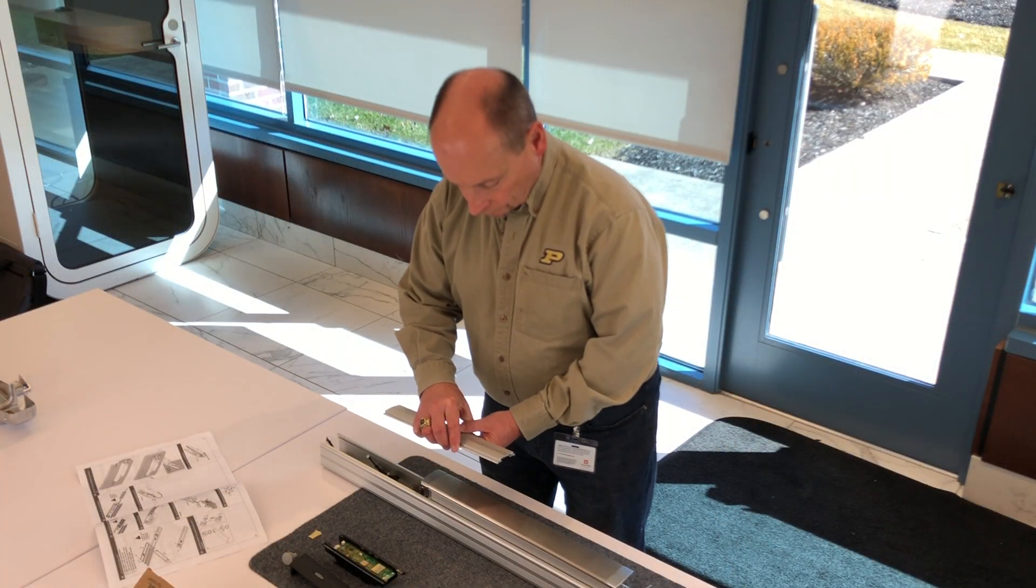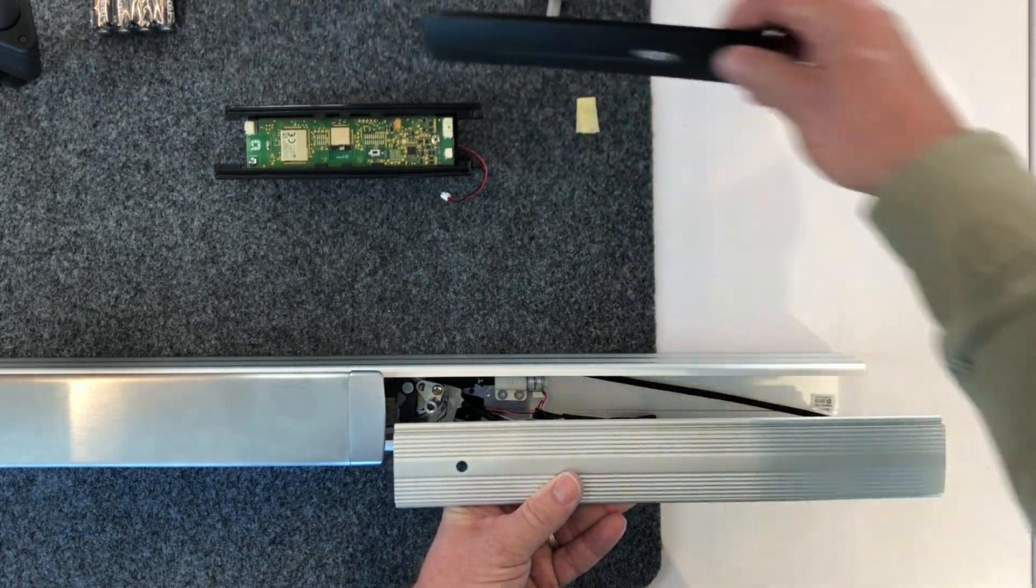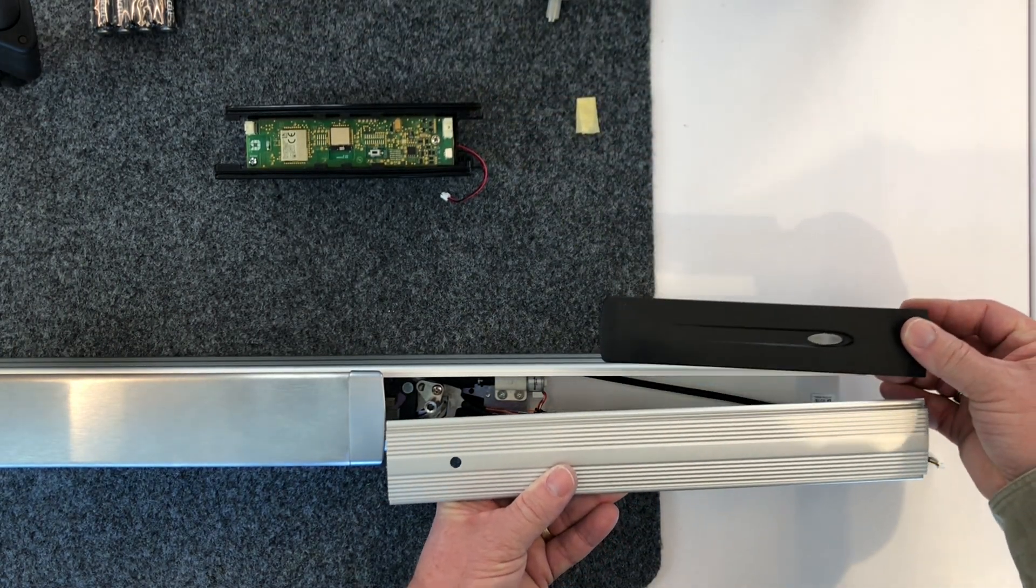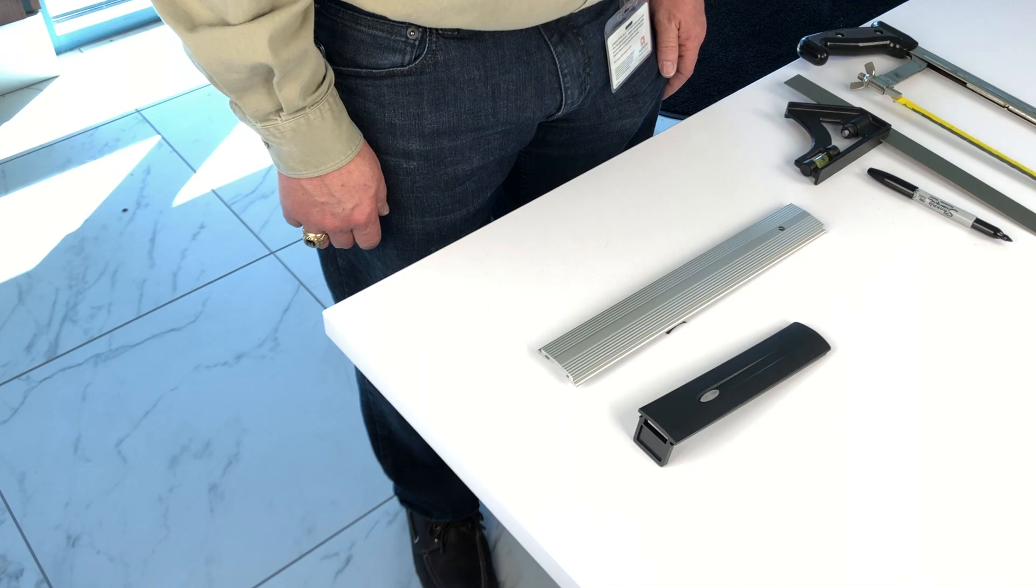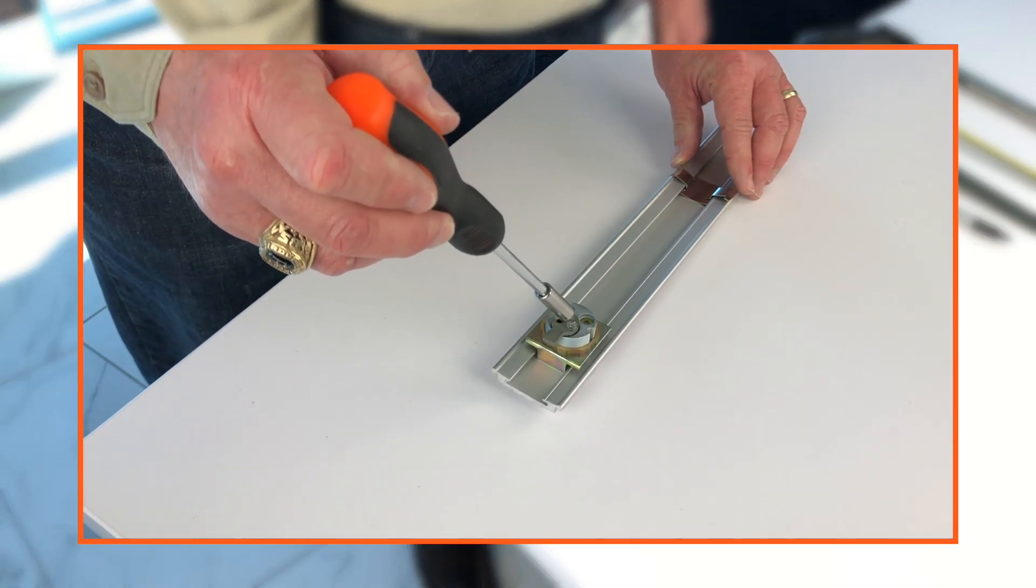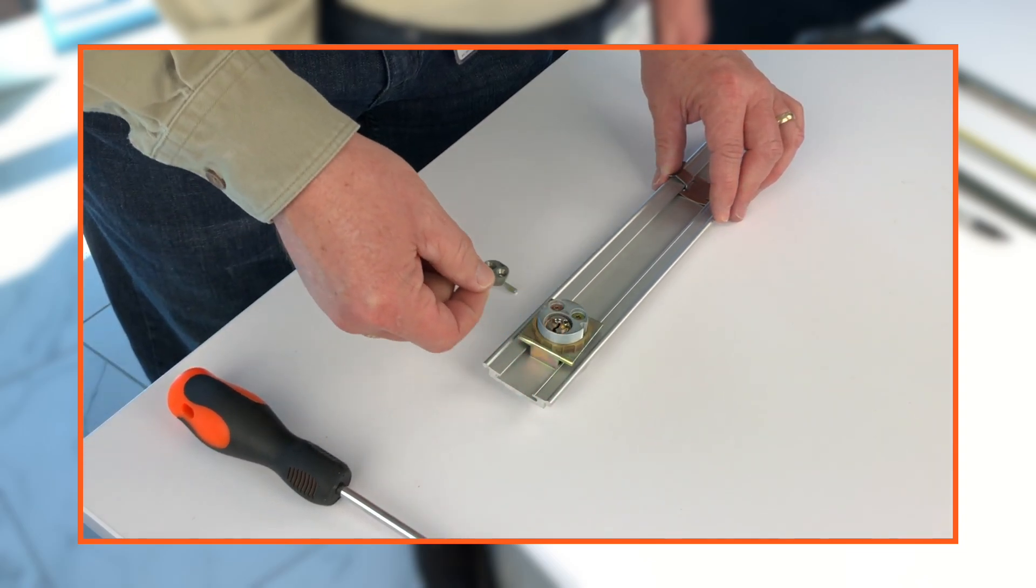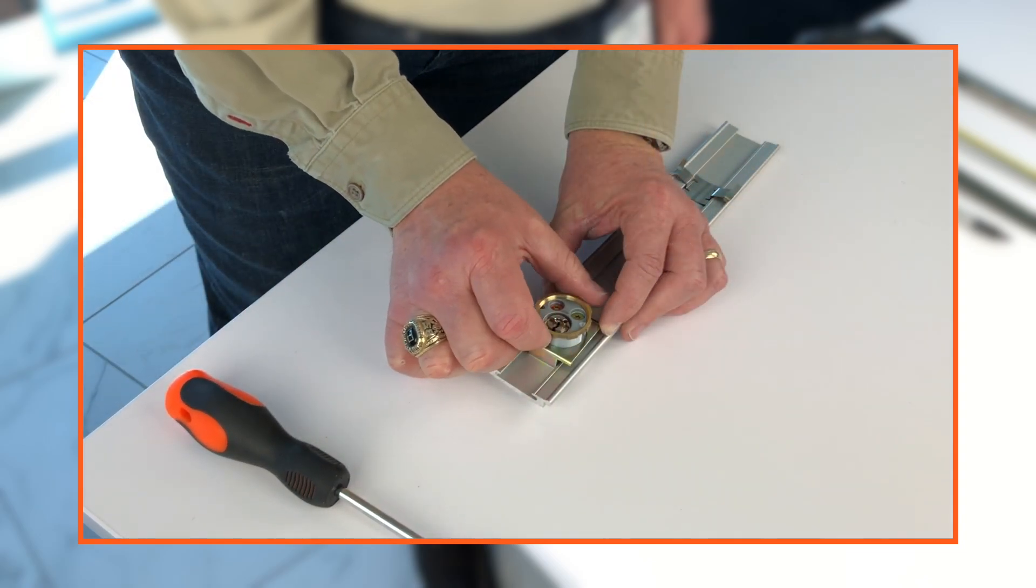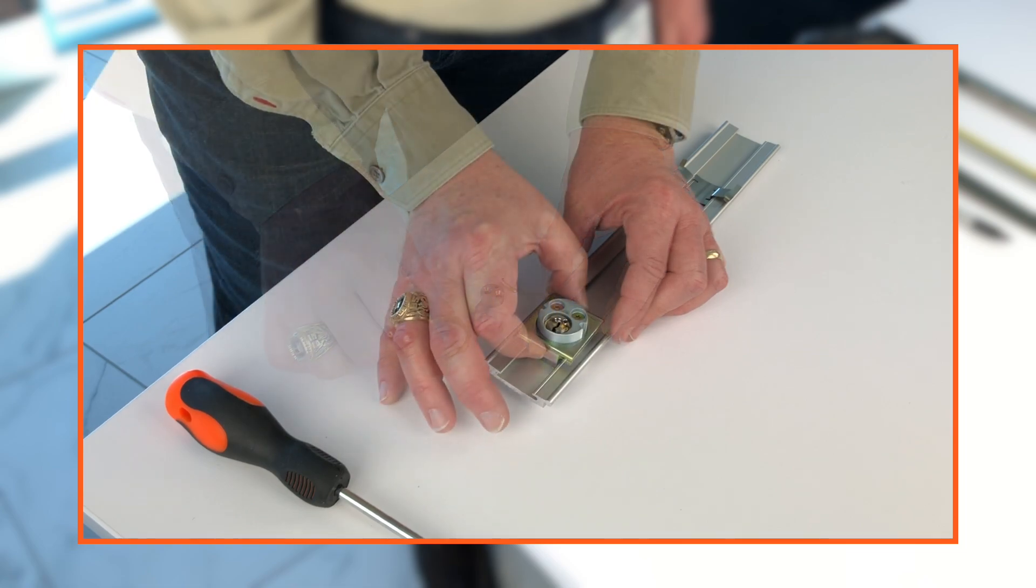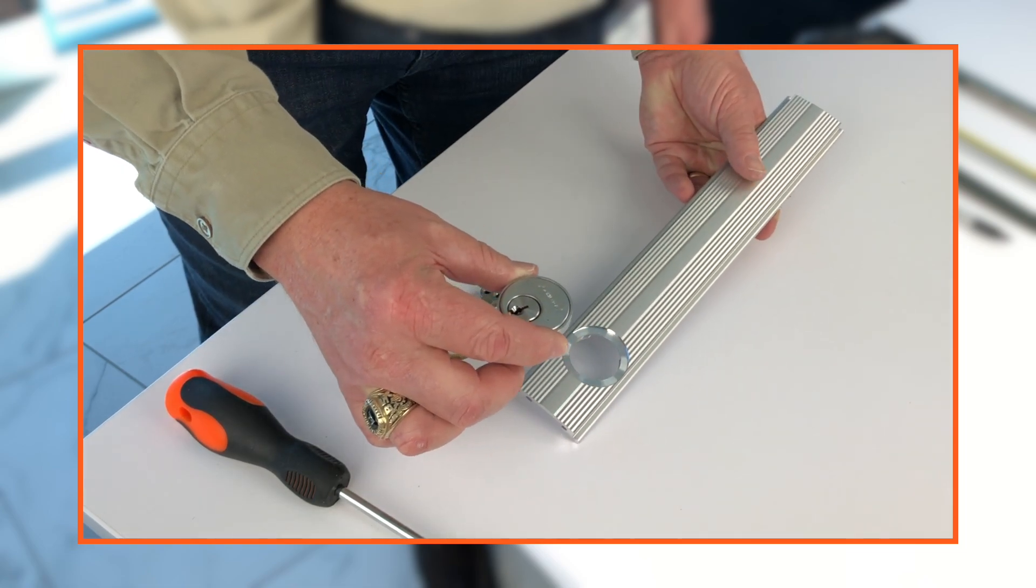To accommodate the remote module cover, the existing cover plate must be cut. If your cover has a cylinder, remove the screw holding the cam, and then remove the cam. Unscrew the cylinder lock nut. Remove the cylinder locating washer. Then remove the cylinder and collar.